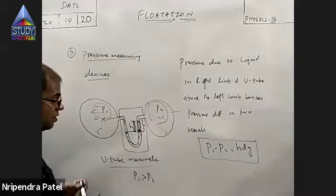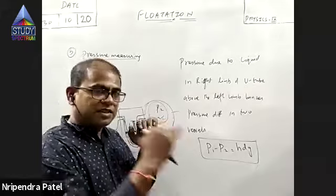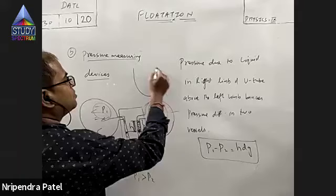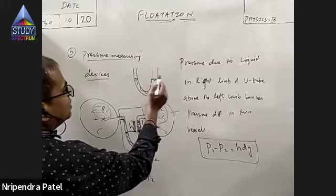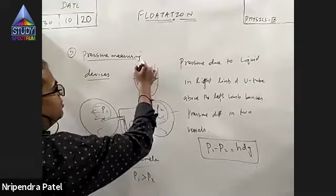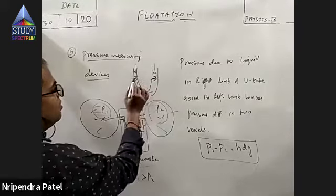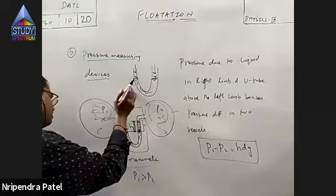Sir, will P1 become equal to P2? No, P1 and P2 will not become equal. Pressure at this point and pressure at the same level — if it's the same, then liquid will not flow from one point to another. If this was a U-tube connected to nothing, pressure here and pressure here are both atmospheric because it is open to atmosphere. So the level of liquid in both limbs is the same.